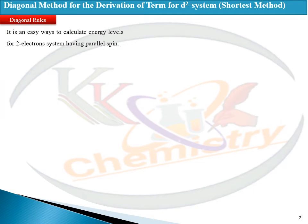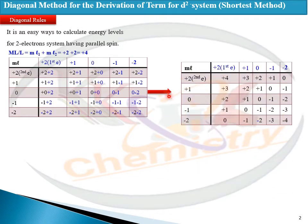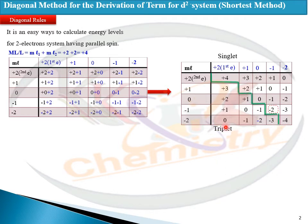The d² system, as previously discussed, is a two-electron system. You will have to add the ML values on both sides. Taking ML values horizontally, this row will be added with this column — like plus two plus two gives plus four. We have added all these values: plus two plus two equals four, plus one plus two equals three, zero plus two equals two, minus one plus two equals plus one, and minus two plus two gives zero.